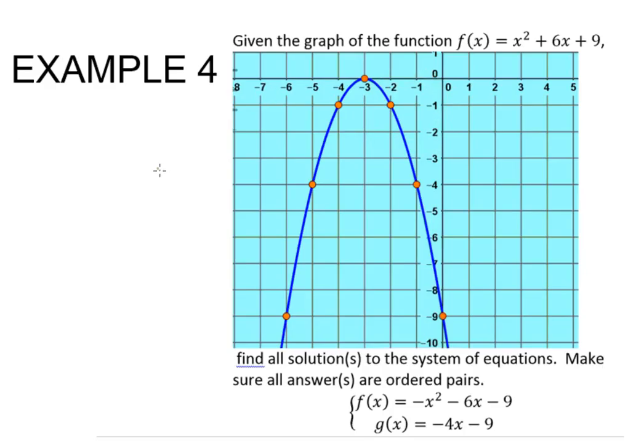Okay, in this example, we are given this graph, and this is actually not the right graph. This should say negative x squared plus 6x plus 9. So it's right here, not up there. This is what we're going to go off of. This one is already graphed.